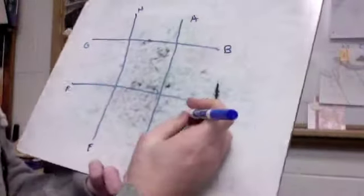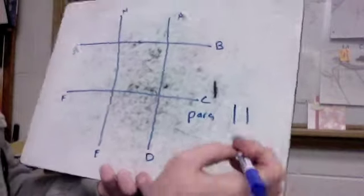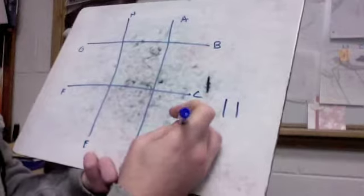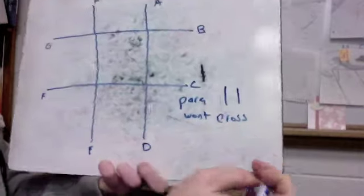First of all, I know that parallel we use a symbol like this and it just means basically won't cross or won't touch.